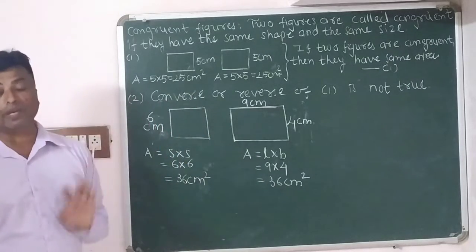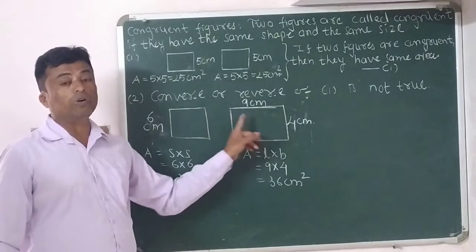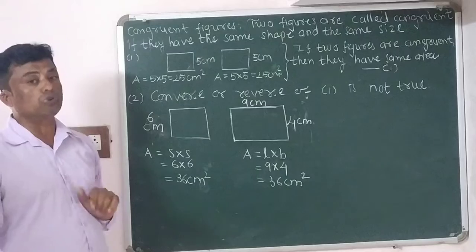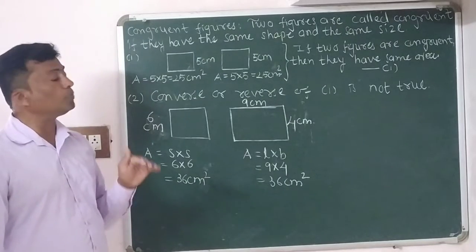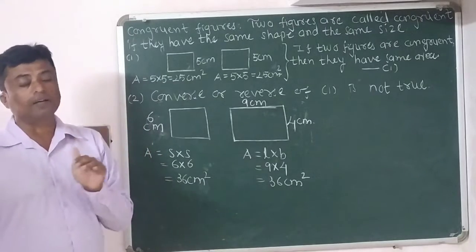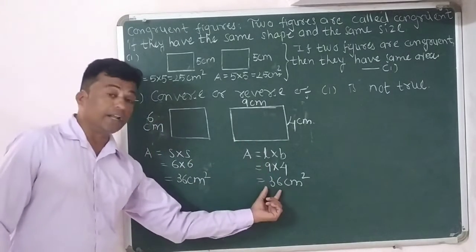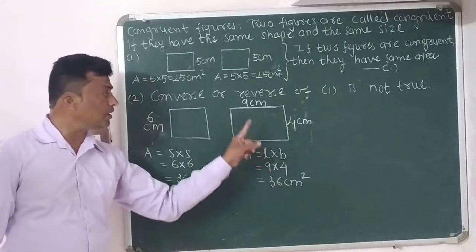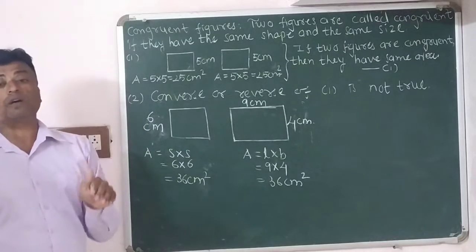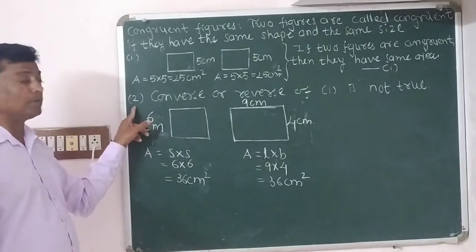Both figures have the same area, but they do not have the same shape and size — one is a square and the other is a rectangle. So the opposite of statement one is not true. If two figures have the same area, they are not necessarily congruent to each other. The square has area 36 centimeter square and the rectangle also has area 36 centimeter square, but they are not congruent.